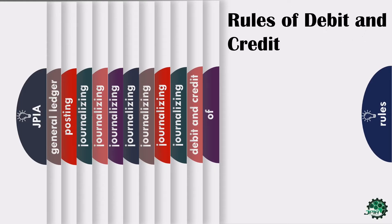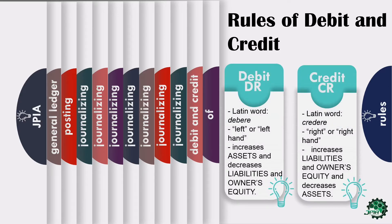Rules of Debit and Credit. Let me first ask a question: What is the use of debit and credit? What is this for? This is to determine the normal balance of an account and where it increases or decreases. DR is short for debit while CR is short for credit.